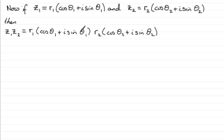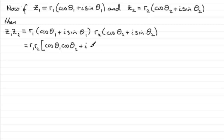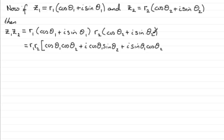Multiplying out, we get R1 R2 at the front, then expanding the brackets: cos theta 1 cos theta 2, plus i cos theta 1 sine theta 2, plus i sine theta 1 cos theta 2, and finally plus i squared sine theta 1 sine theta 2. Since i squared equals negative 1, that last term becomes minus sine theta 1 sine theta 2.